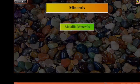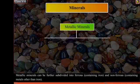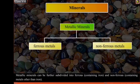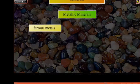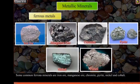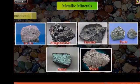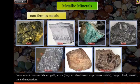Metallic minerals can be further subdivided into ferrous, containing iron, and non-ferrous, containing metals other than iron. Some common ferrous minerals are iron ore, manganese ore, chromite, pyrite, nickel, and cobalt. Some non-ferrous metals are gold and silver — also known as precious metals — copper, lead, bauxite, tin, and magnesium.